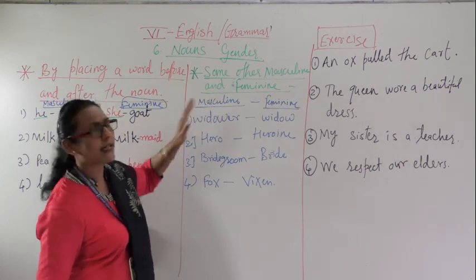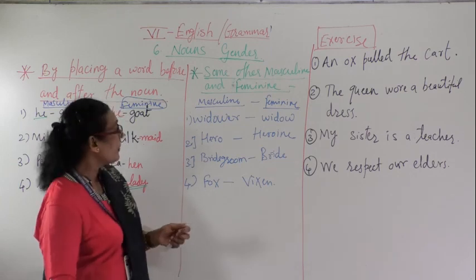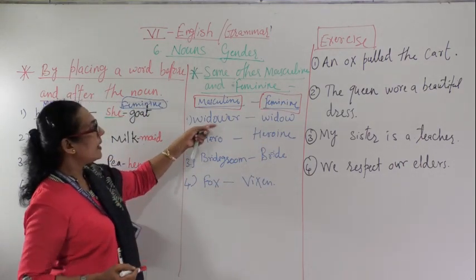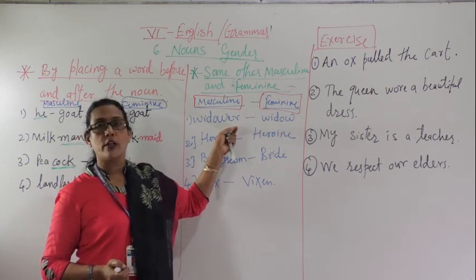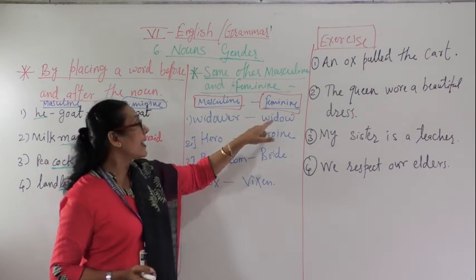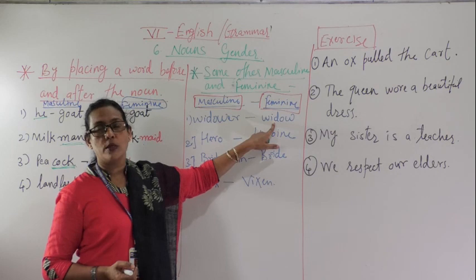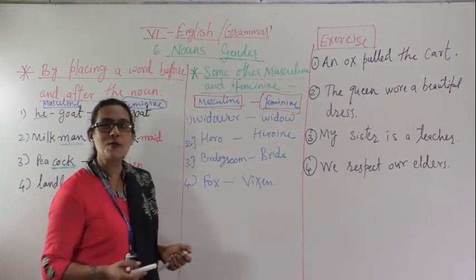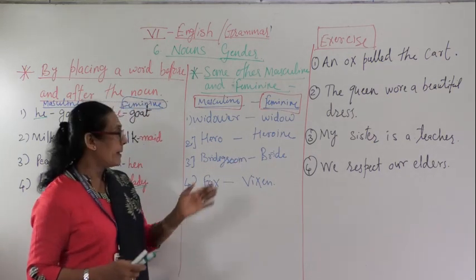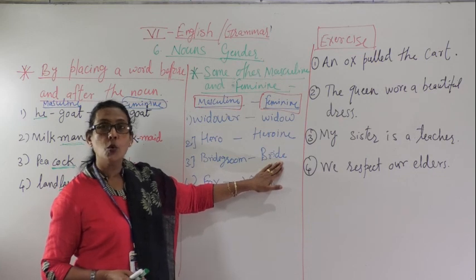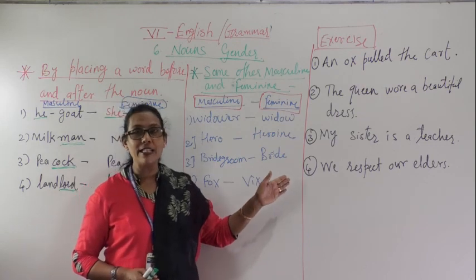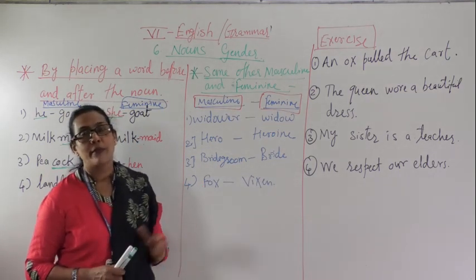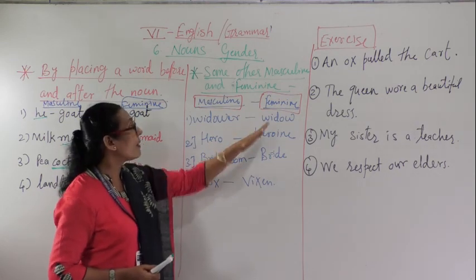Some other masculine and feminine pairs: Widower — a man who does not have a wife — and Widow — a lady who does not have a husband. Hero and Heroine. Bridegroom — the groom — and Bride. Fox and its feminine is Vixen.